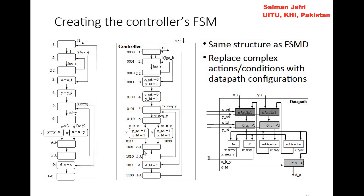After state 8, we move back to state 6, then from state 6 back to state 5, and from state 5 we again check the condition. If the signal 'not x_not_equal_to_y' is true, we move to state 9, where only d_load should be 1. From state 9 we return to state 1. Note that g0_i is treated as an external signal to this controller, as shown in the diagram.